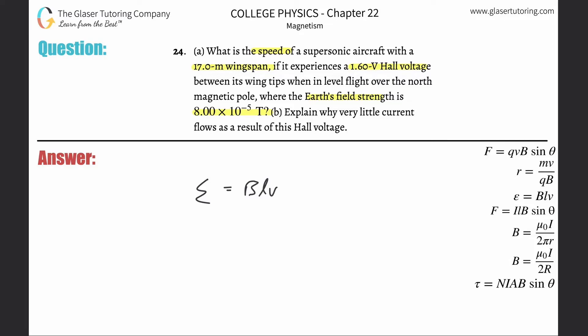So the Hall voltage is 1.6, the magnetic field is 8 times 10 to the minus fifth, the length here is 17 meters, and now we're trying to find the velocity, the speed.